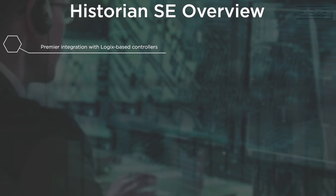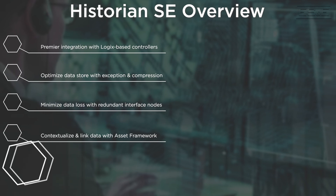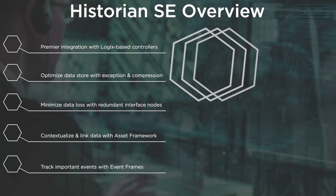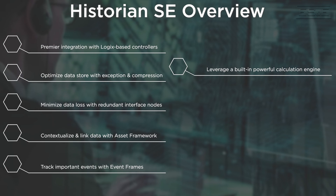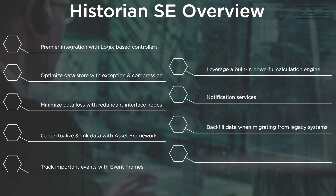To summarize: FactoryTalk Historian SE has premier integrations with Logix controllers. We have optimized data storage with exception and compression capabilities. We can minimize data loss with redundant FactoryTalk Live Data interface nodes included with every Historian SE server. You can contextualize your data and link it to external data sources using asset framework, track important events like downtime with event frames, leverage a powerful built-in calculation engine for analysis, and stay informed with notification services. You can also backfill data with migration from legacy systems and access your data anytime using the high availability configuration. Please contact ES&E to learn more about products that can help enable your digital transformation.